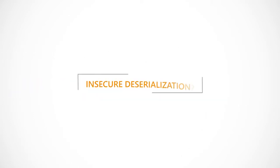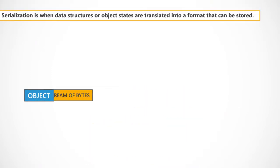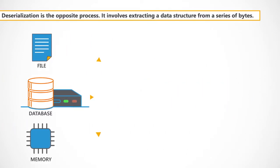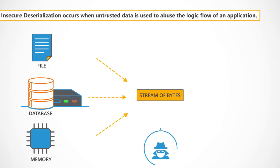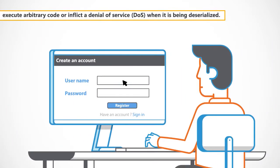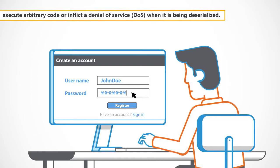So, what is Insecure Deserialisation? Serialisation is when data structures or object states are translated into a format that can be stored. Deserialisation is the opposite process — it involves extracting a data structure from a series of bytes. Insecure Deserialisation occurs when untrusted data is used to abuse the logic flow of an application, execute arbitrary code or inflict a Denial of Service when it is being deserialised.